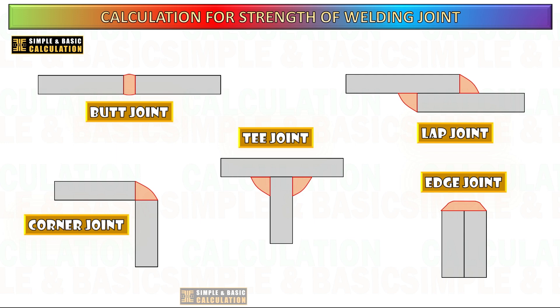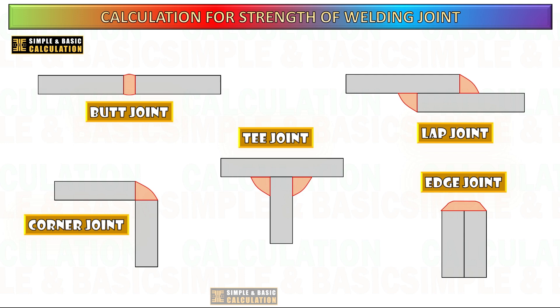Edge joint: edges of two pieces aligned and welded, often used for thin metal pieces. Cruciform joint: four pieces forming a cross, used in strong structural intersections.